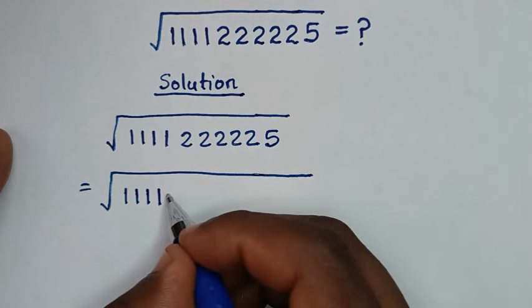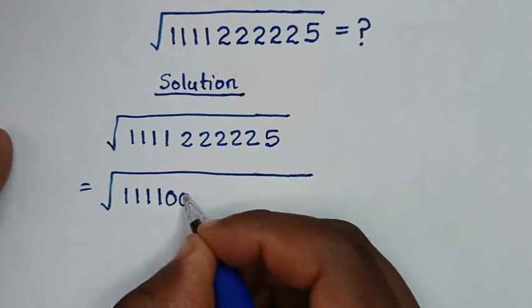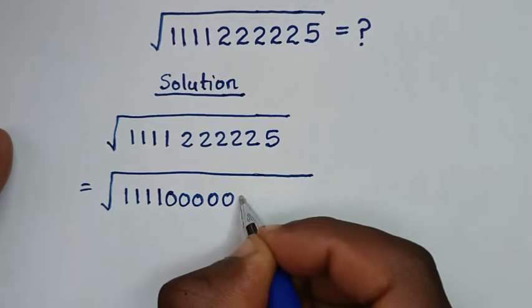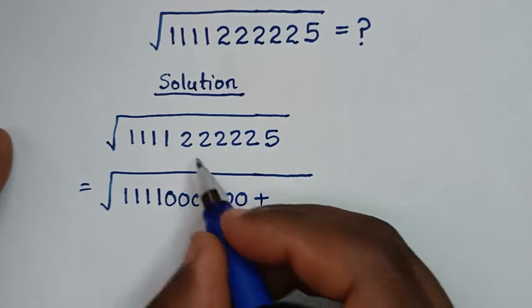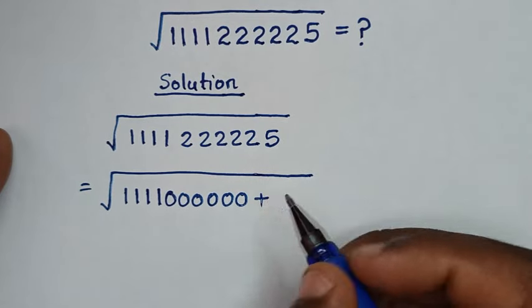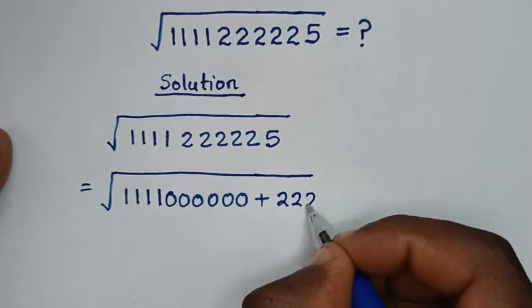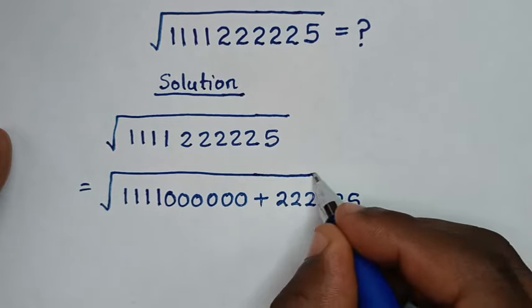So we put 0s, it will be 0s: 1, 2, 3, 4, 5, 6. Then plus these numbers here, which is 2, 2, 2, 2, 2, 5.